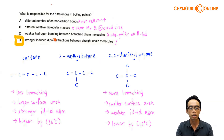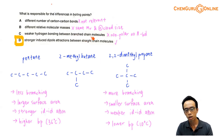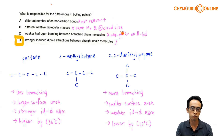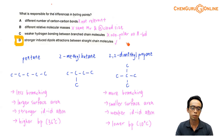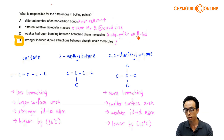Option C: weaker hydrogen bonding between branched chain molecules. This is not relevant because these molecules are non-polar, and the dominant intermolecular interaction will be ID-ID attraction, not hydrogen bonds. So C is definitely out.